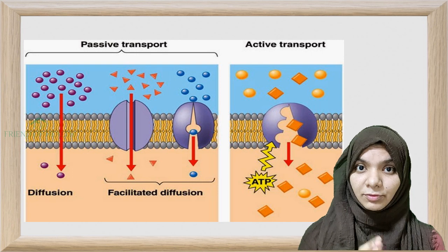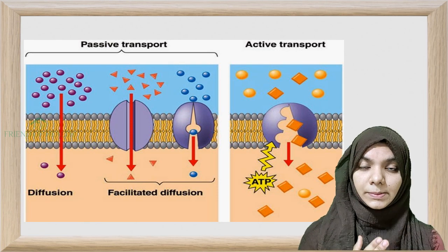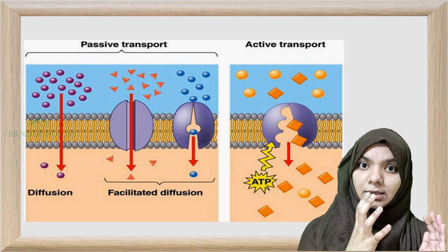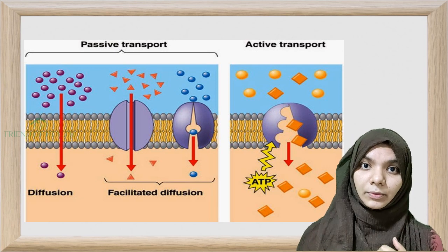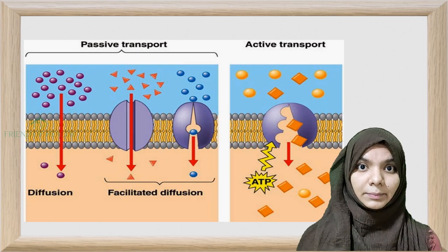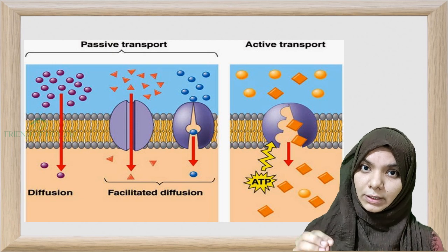Passive transport requires no energy. It is the movement of molecules from high concentration to low concentration. Simple diffusion is a random movement of a substance or ion from high concentration to low concentration without the help of energy or a carrier protein. The only energy involved is kinetic energy — the energy an object possesses when in motion.